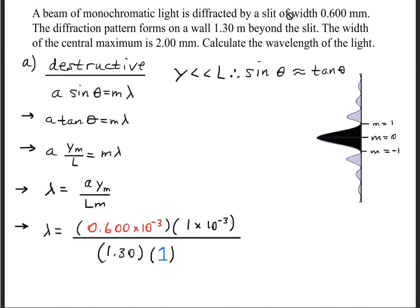We were told that the aperture or the slit has a width of 0.600 millimeters or 0.600 times 10 to the minus 3 meters. And the distance from the central maximum to the first dark fringe is 1 millimeter. So that's why I went over that in the beginning. This is 1 times 10 to the minus 3 meters.